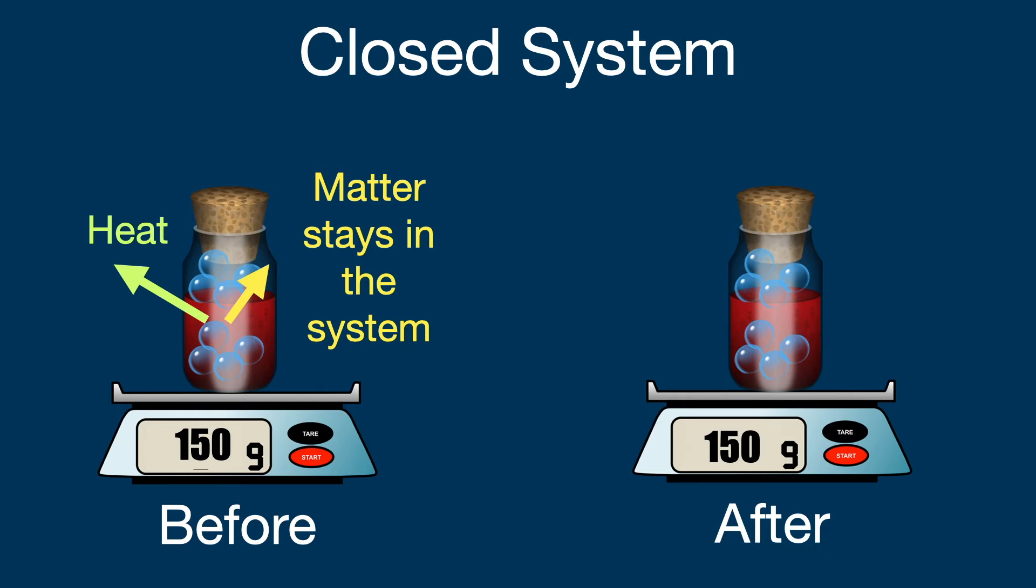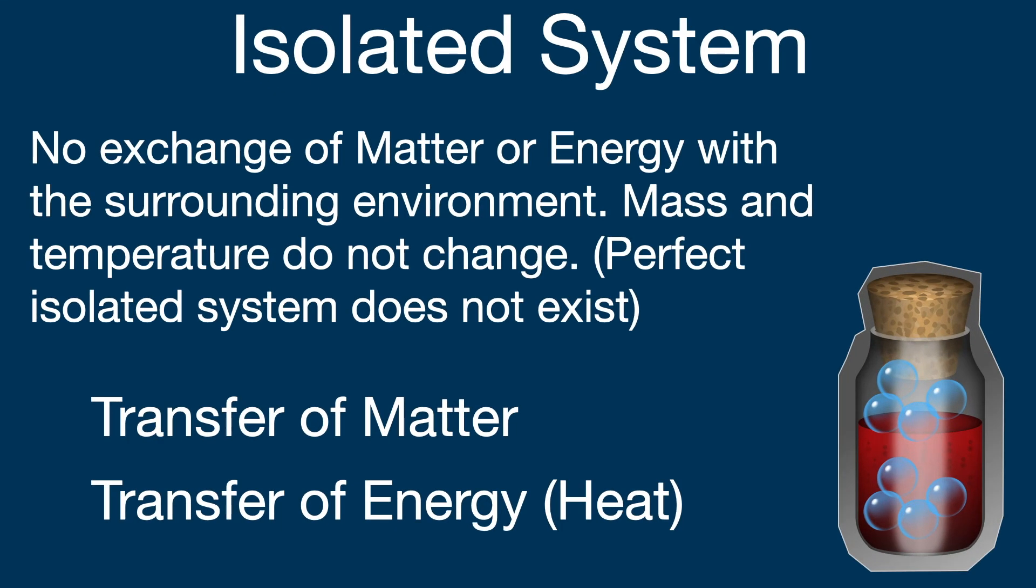In an isolated system, there is no exchange of matter or energy with the surrounding environment. Mass and temperature do not change. A perfect isolated system, however, does not exist.